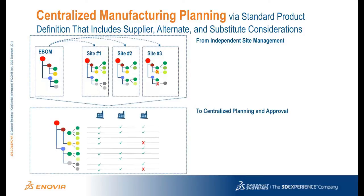The solution is to move the definition of site-specific alternates and supplier equivalents to the eBOM specification itself. This means engineers and designers are involved as much as manufacturing engineers and purchasing agents. For each part in the eBOM that the company makes, engineers also define other part numbers that manufacturing can either substitute regardless of use or for specific usage scenarios. For those parts provided by suppliers, a list of all the supplier part numbers that provide the same fit, form, and function is defined from a central perspective.